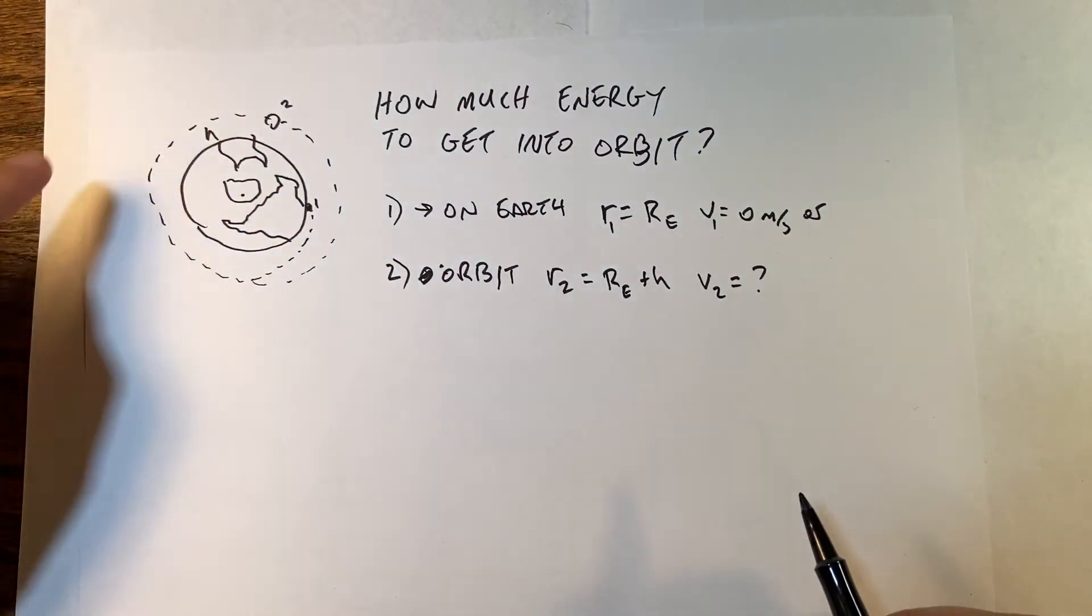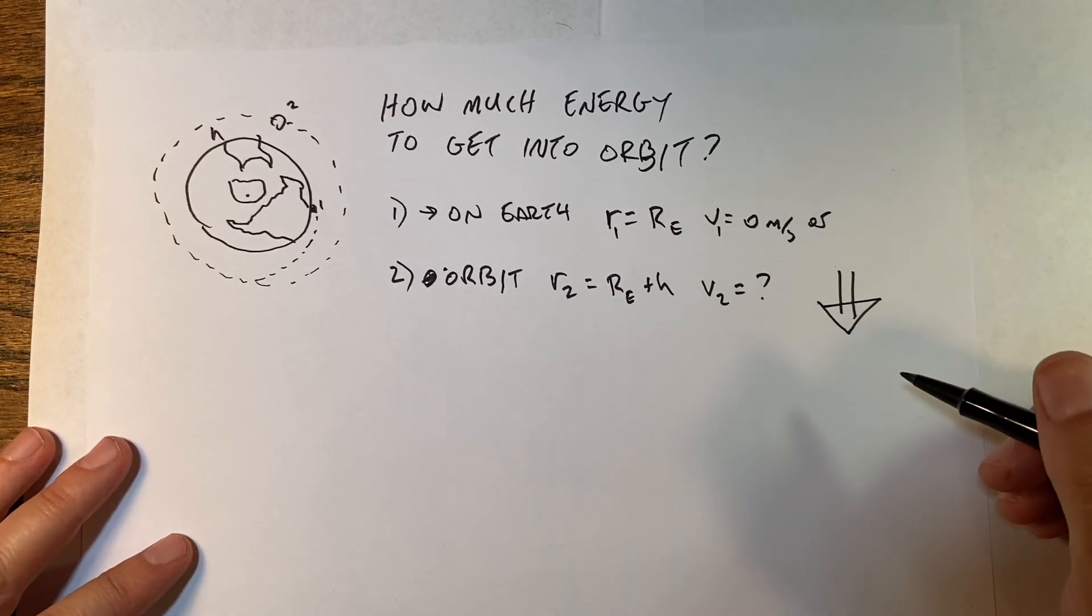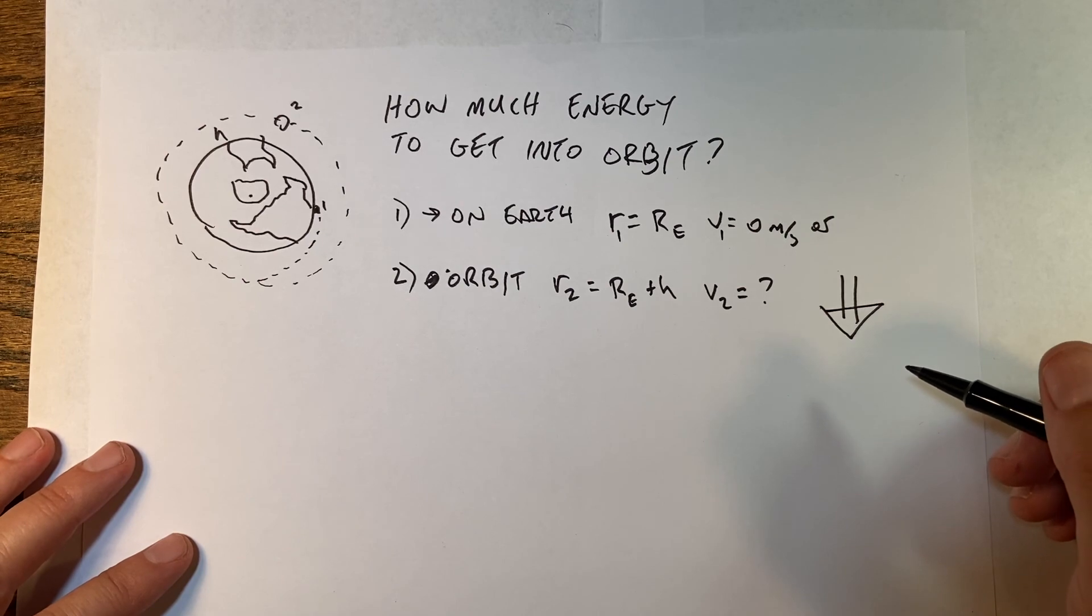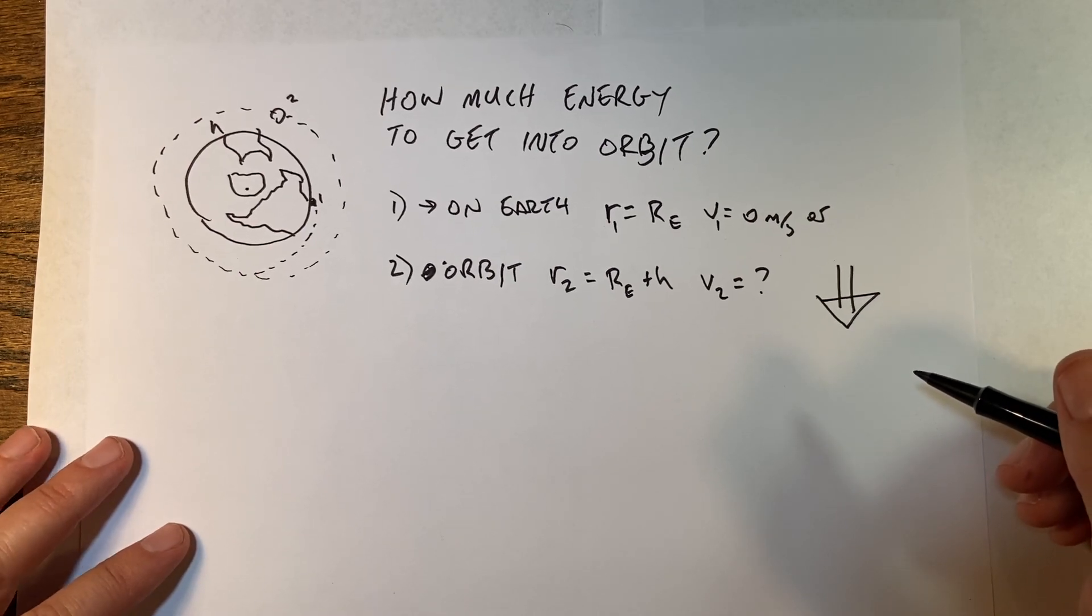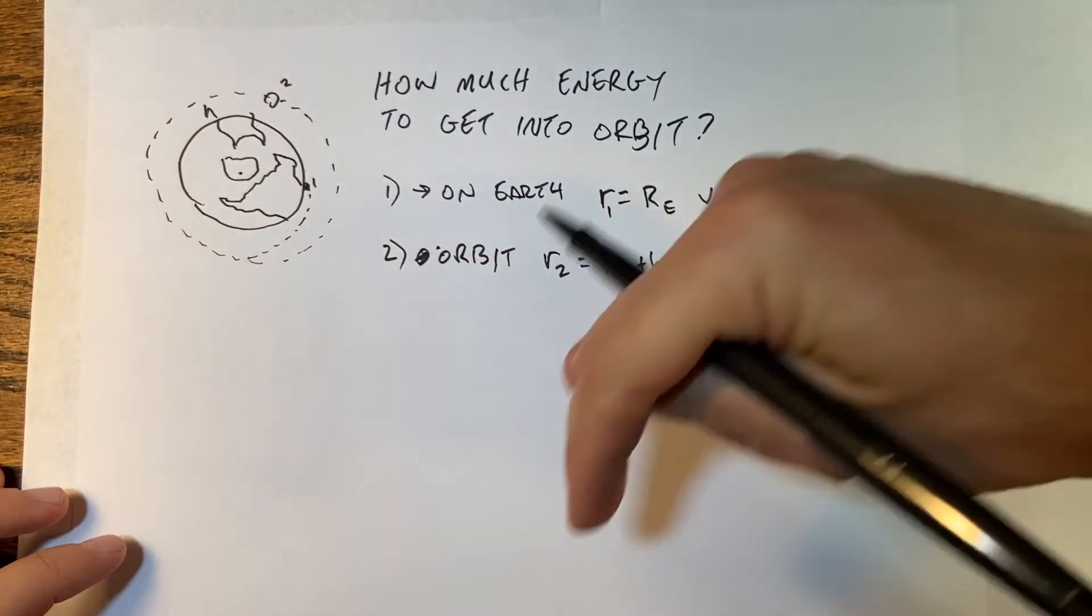So one on earth, r equals the radius of the earth, v equals either zero or something. If you're on the equator you're actually moving. So I'll do this both ways. For position two, we have the spacecraft up here in orbit.